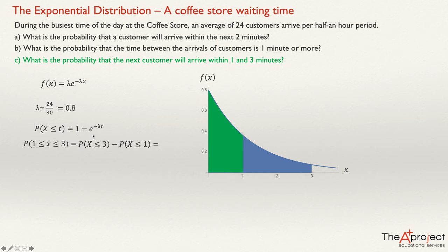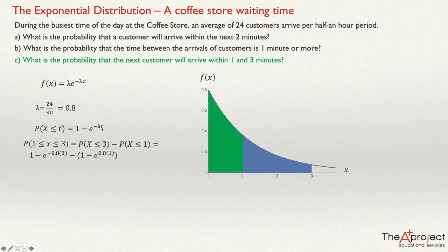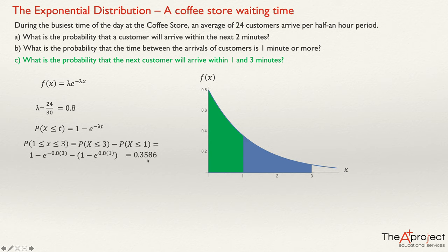Making the substitutions, the answer is: [1 − e^(−0.8×3)] − [1 − e^(−0.8×1)]. The two 1's cancel, leaving e^(−0.8×1) − e^(−0.8×3), which is positive. Typing this into your calculator gives the answer: 0.3586.